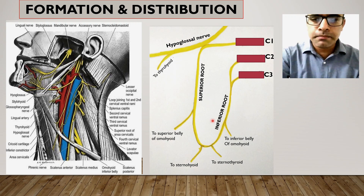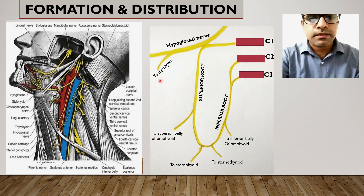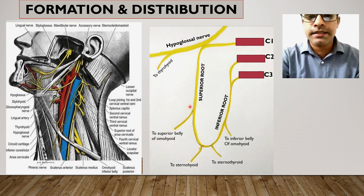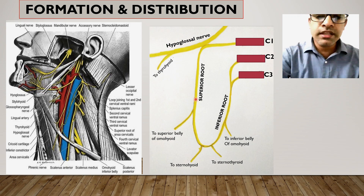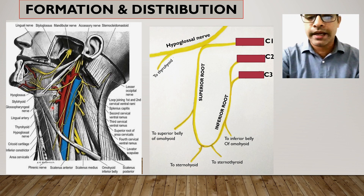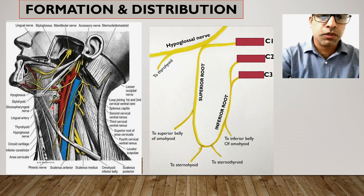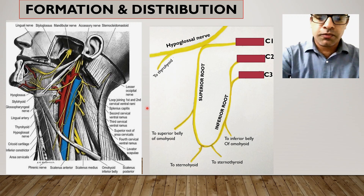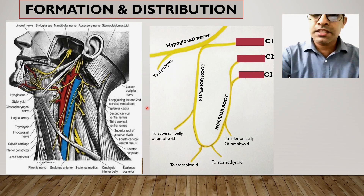Finally, regarding the clinical anatomy of ansa cervicalis: any injury at any point of the ansa cervicalis can result in paralysis of the concerned muscle. Paralysis of these infrahyoid muscles can interfere with the activities of the larynx and the movement of the hyoid bone during deglutition. That covers the ansa cervicalis — its position, formation, relations, branches, and distribution.